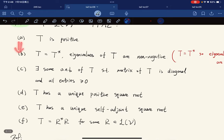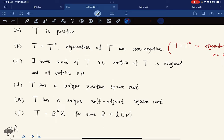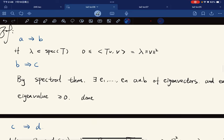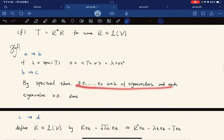For B implies C, by the spectral theorem there is an orthonormal basis of eigenvectors, and each eigenvalue is non-negative.